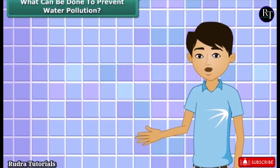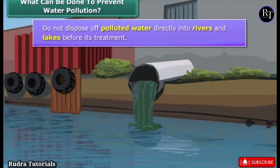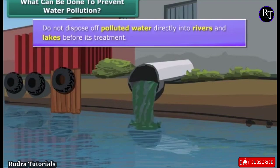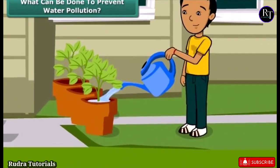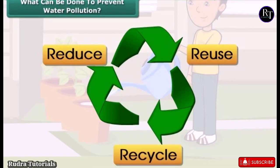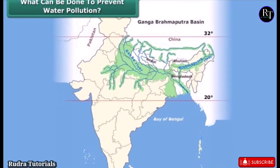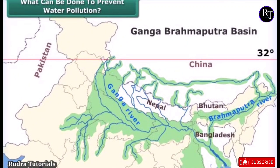Students, you need to help control water pollution. These are some simple ways: do not dispose of polluted water directly into rivers and lakes before treatment. Reuse water that is used for washing vegetables for watering plants in the garden. Reduce, reuse and recycle should be our mantra to control water pollution. The government also took measures — for example, the Ganga Action Plan was launched in 1985 to reduce pollution levels in the river.